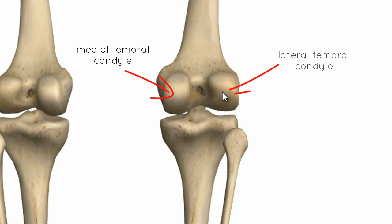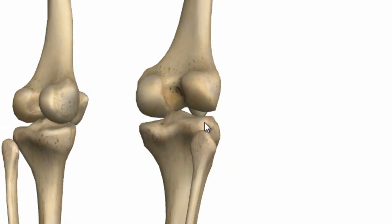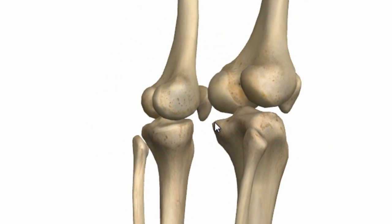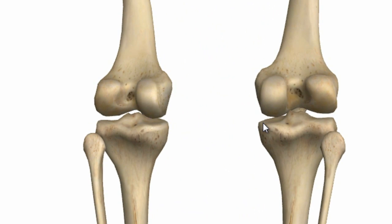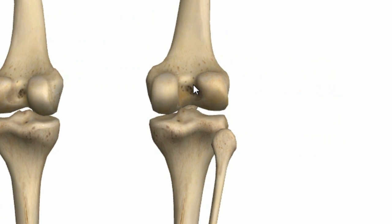We've got a medial and a lateral femoral condyle, and the same for the tibia — medial and lateral tibial condyles. The articular surface of the tibial condyles is the superior surface. The two femoral condyles are separated by this region between them, which is the intercondylar fossa.